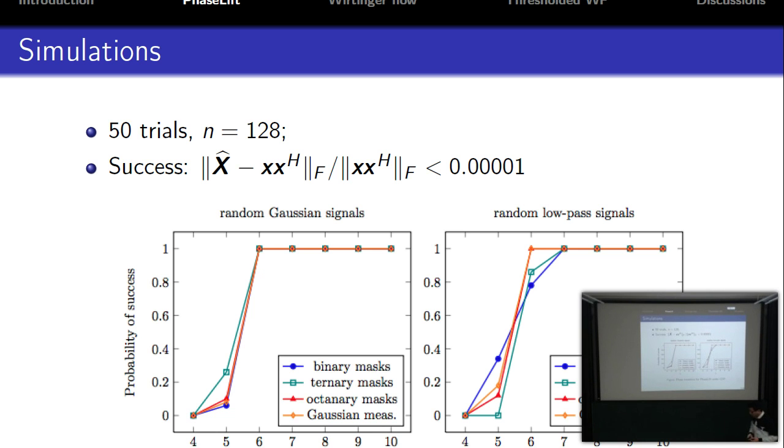Under this coded diffraction patterns model with admissible modulations, we prove that as long as we have more than order log n masks, this convex optimization method can recover the signal with high probability. Now let's see some simulations. We want to know empirically how many masks are enough for PhaseLift to recover the low-rank matrix exactly. We consider both admissible and binary masks. The Gaussian model requires fewer measurements. For different kinds of signals, we can see the empirical behavior. For inadmissible random masks such as binary masks, the behavior is a little bit worse.